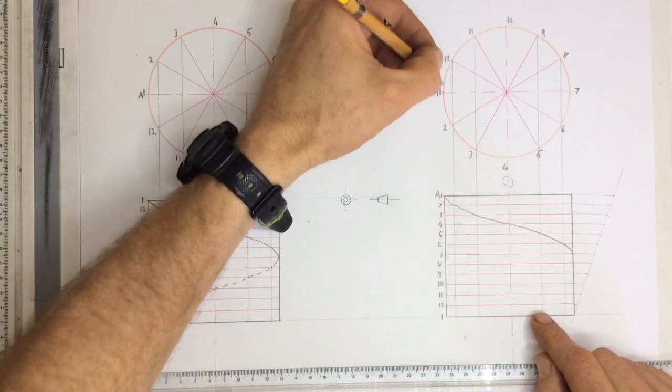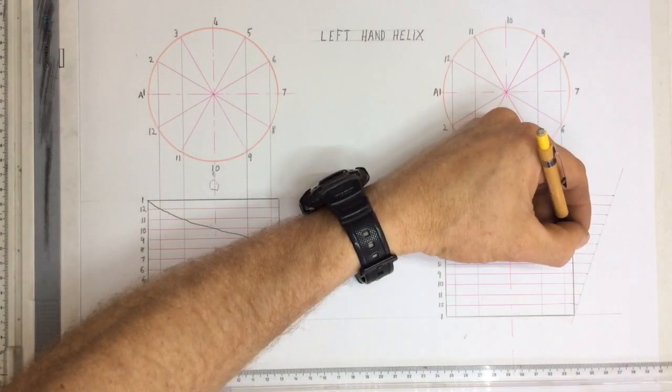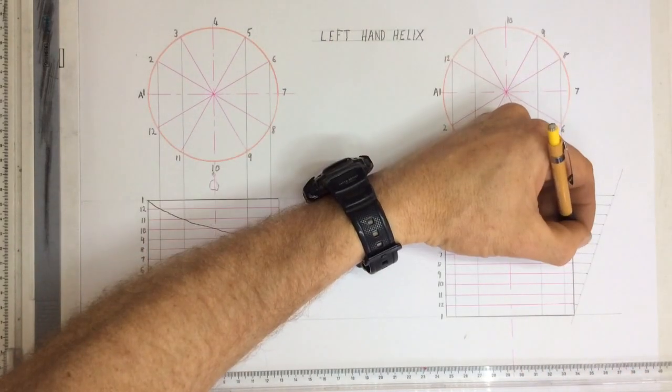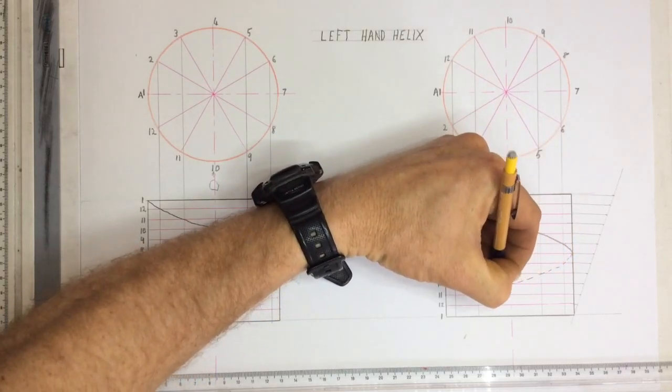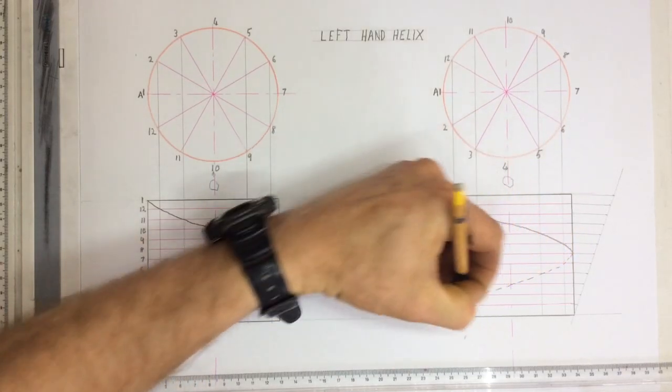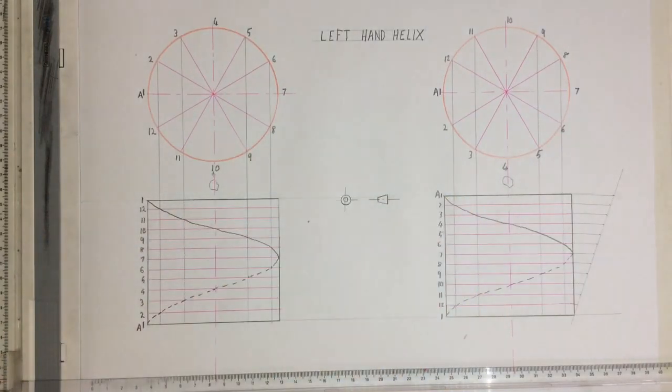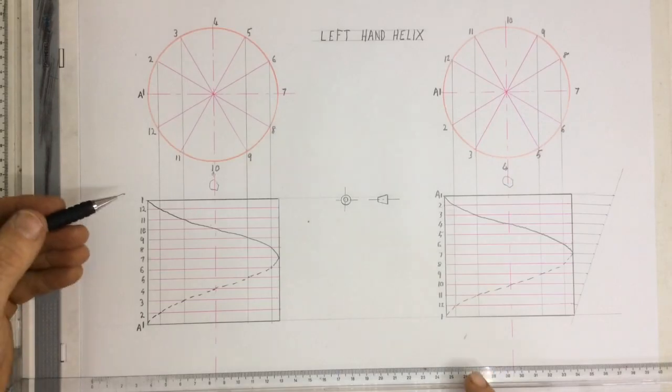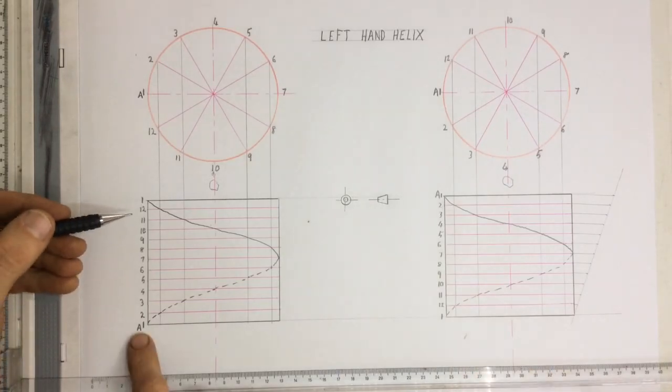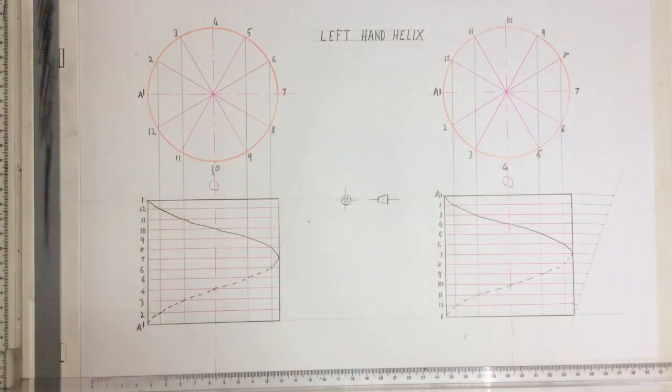Seven to eight and going around to twelve, that's all going to be in hidden detail because it's on the other side. There we go, hidden detail going over there. And there's my left hand thread. Note they're exactly the same thread, just the starting position is in this one at the bottom, this one is at the top.